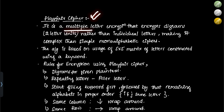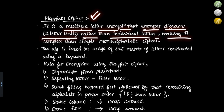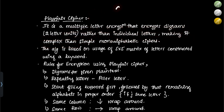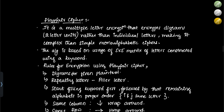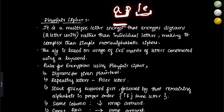Playfair cipher is a multiple letter encryption that encrypts digrams — that is, two-letter units — rather than individual letters, making it more complex than a simple monoalphabetic cipher. In monoalphabetic cipher, A maps to some alphabet, B to another, and so on. But in Playfair, we club alphabets together: A and P would be clubbed and give one cipher value, and L and E would give another.